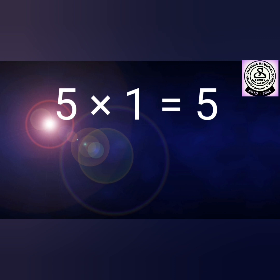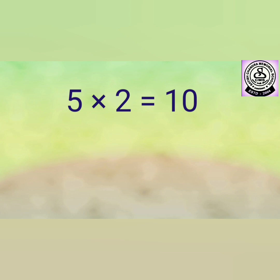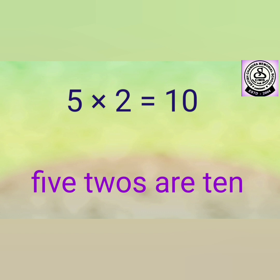Five one is five. Now students, how we are going to say it — five one is five. Say it slowly: five one is five. Five twos are ten. Five twos are ten. Remember this — five twos are ten.